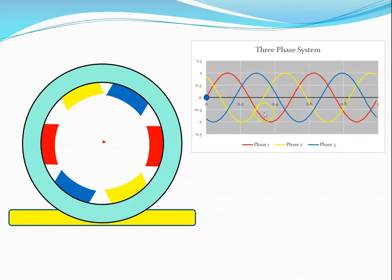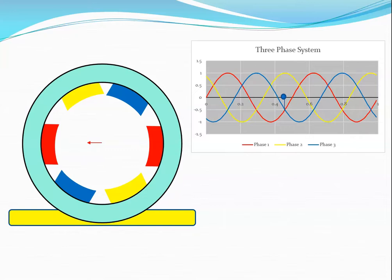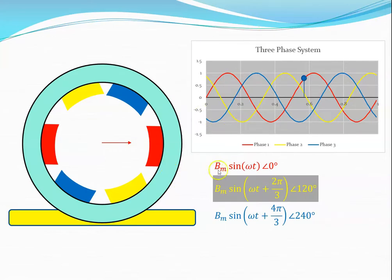If it's represented by this sinusoidal signal here, then the magnitude of the magnetic field at any instance in time varies — it's growing as we go through in time, then it changes direction and then back to zero again. The magnitude of that vector can be represented by BM — the max magnetic flux density — times sine omega T. This is the sinusoidal waveform and omega T is the angle in radians.